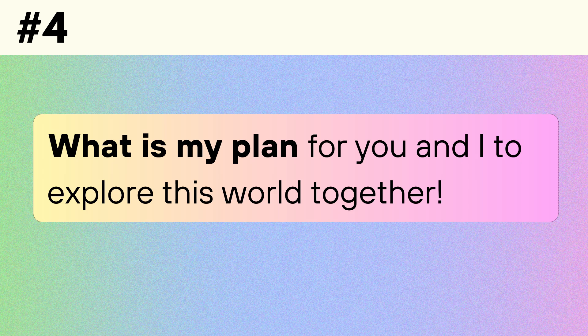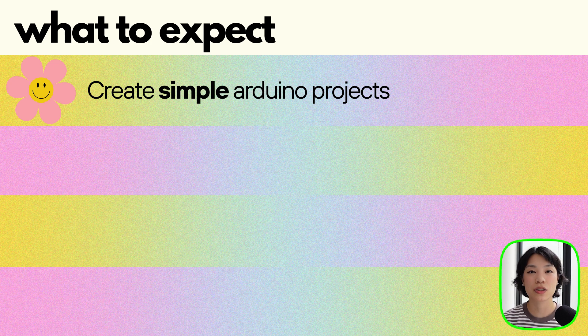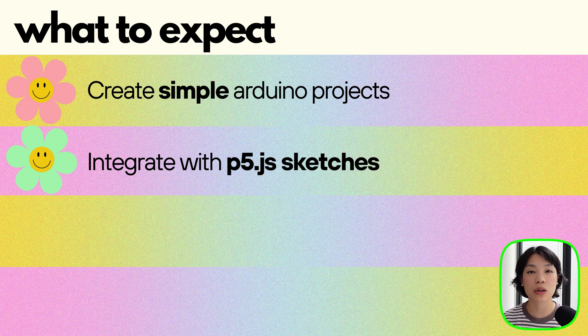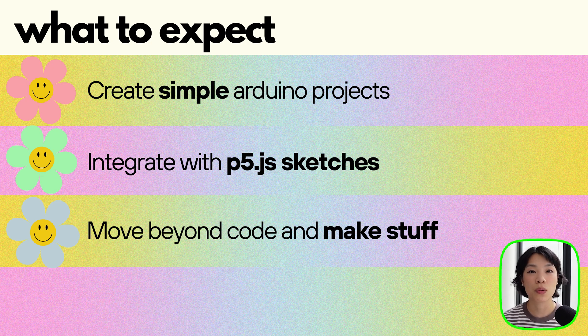Now that I have gone through the basics of physical computing, I hope that it already gets your brain thinking about the many possibilities of the type of projects that you can create. The world is your oyster, honestly. And we don't necessarily have to make everything all physical either — we can also connect some sensors to our p5 sketches and make something visually beautiful on the screen. Here's my current plan: we'll make some simple Arduino projects to dip our toes into the world of physical computing. We'll also integrate it with p5js to see how we can sense the world around us as an input to create something beautiful on the screen. And last but not least, we'll move beyond code and work with some mechanical components.